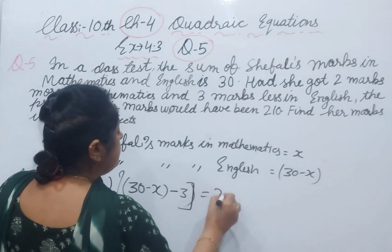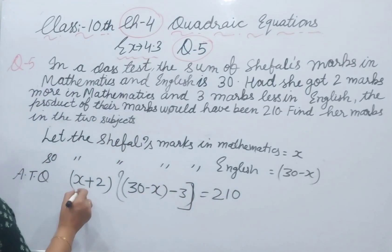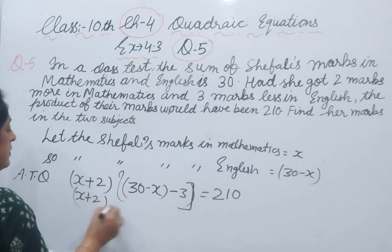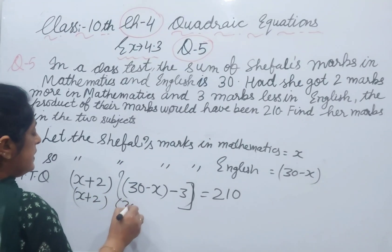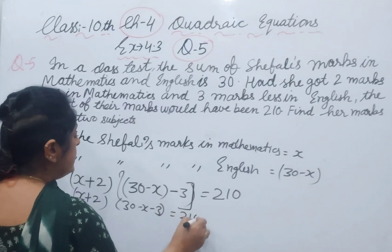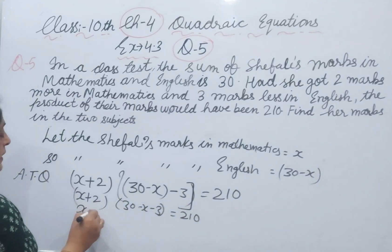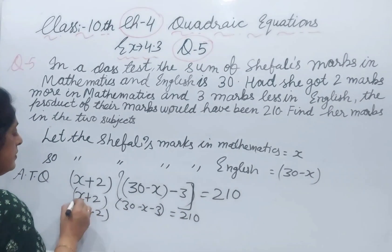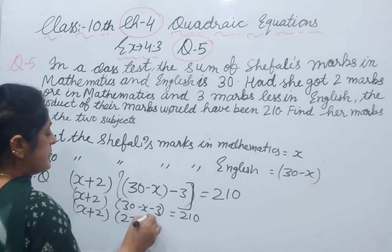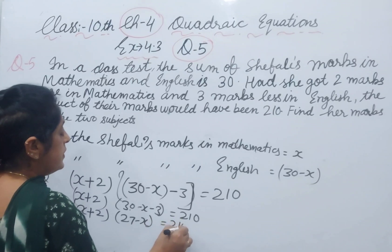Their product will be 210. This means (x + 2) times (30 - x - 3) equals 210. So (x + 2) times (27 - x) equals 210.